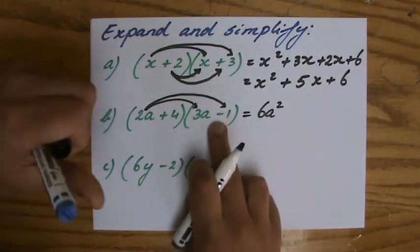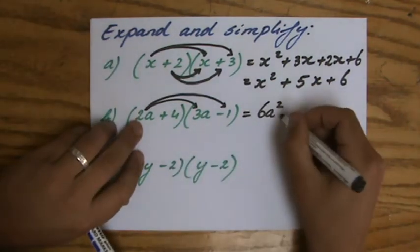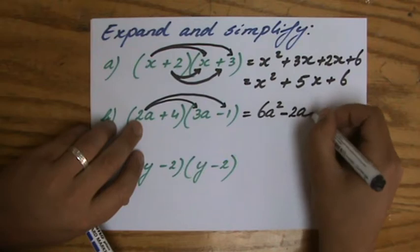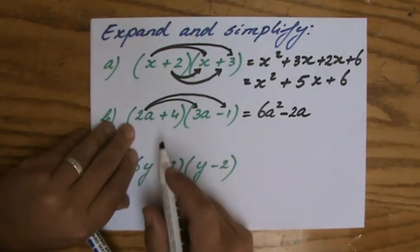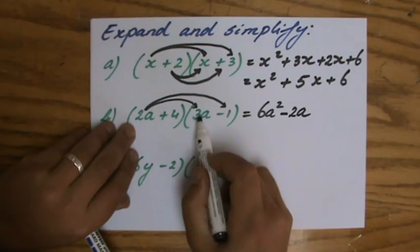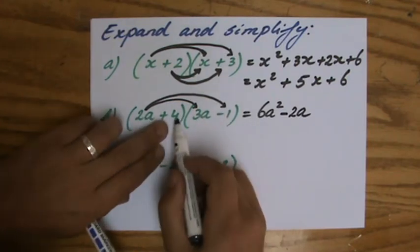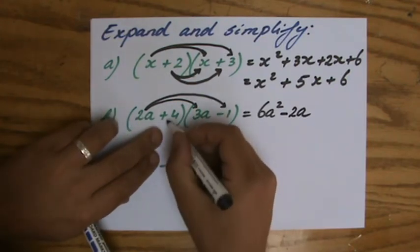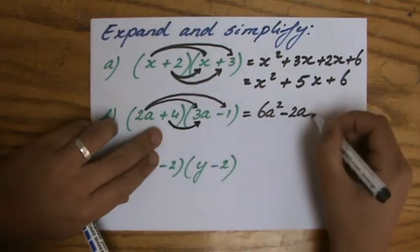2 times 3, a times a is 6a squared. 2a times minus 1, so that will be minus 2a. A positive 2a times a negative 1 gives negative 2a. I've multiplied both terms by 2a, so I'm going to my next term: 4 times 3a, that will be 12a.